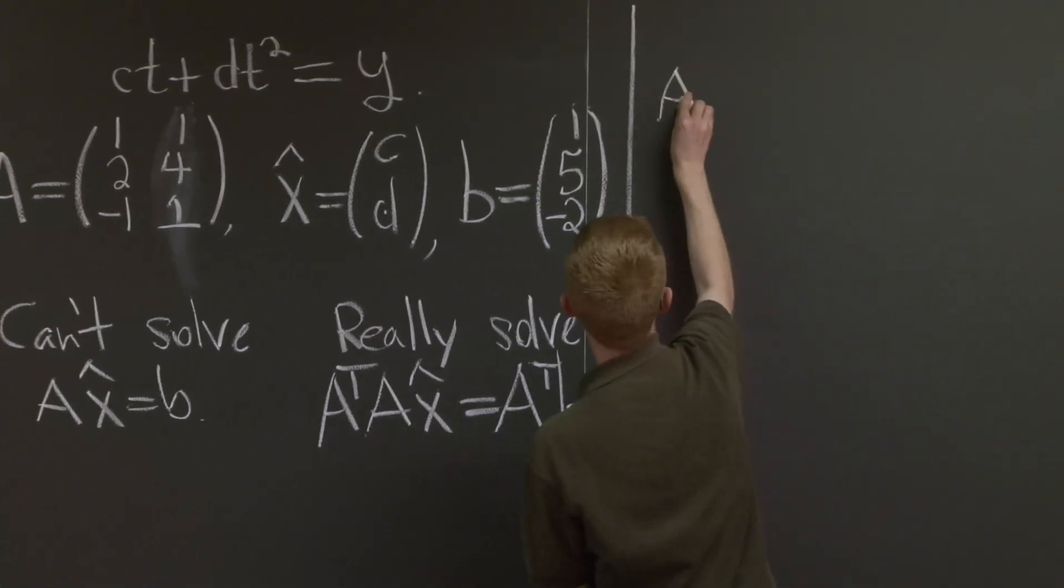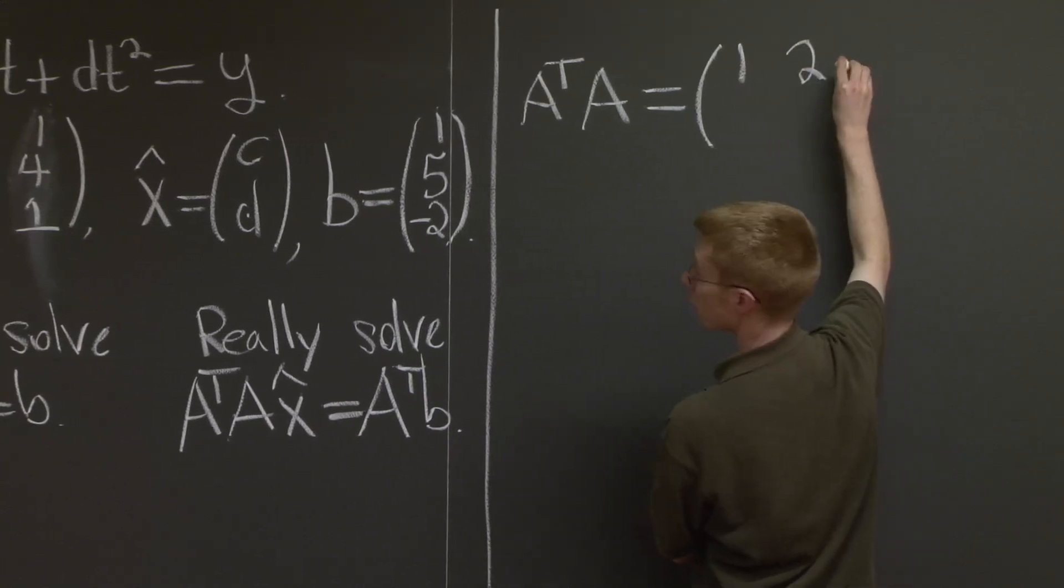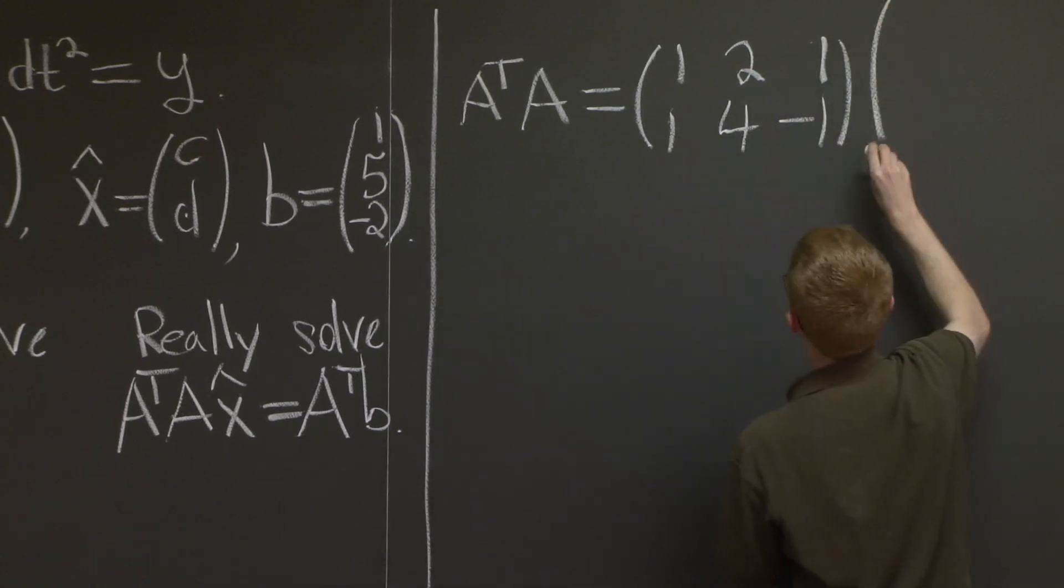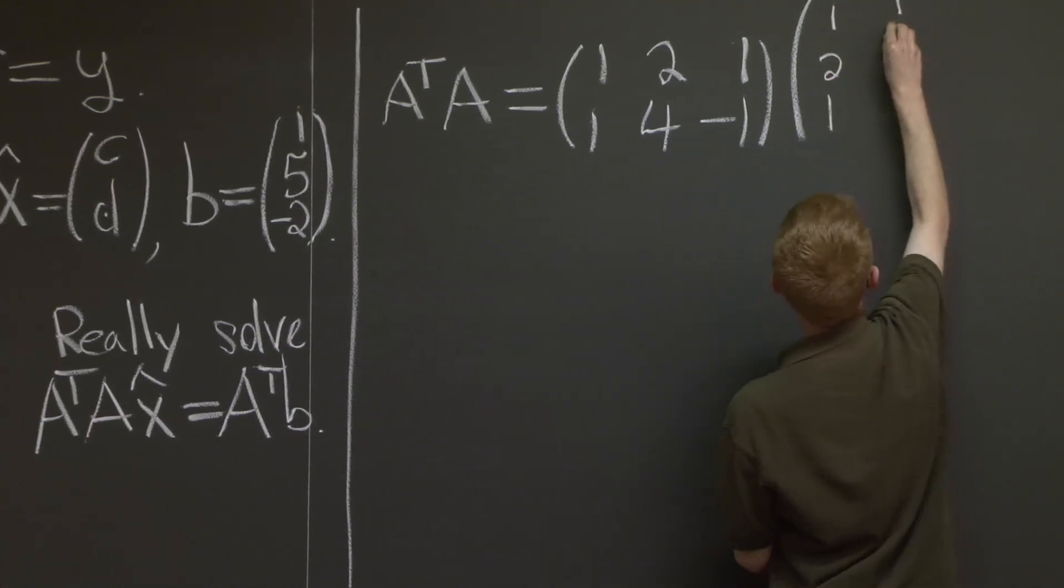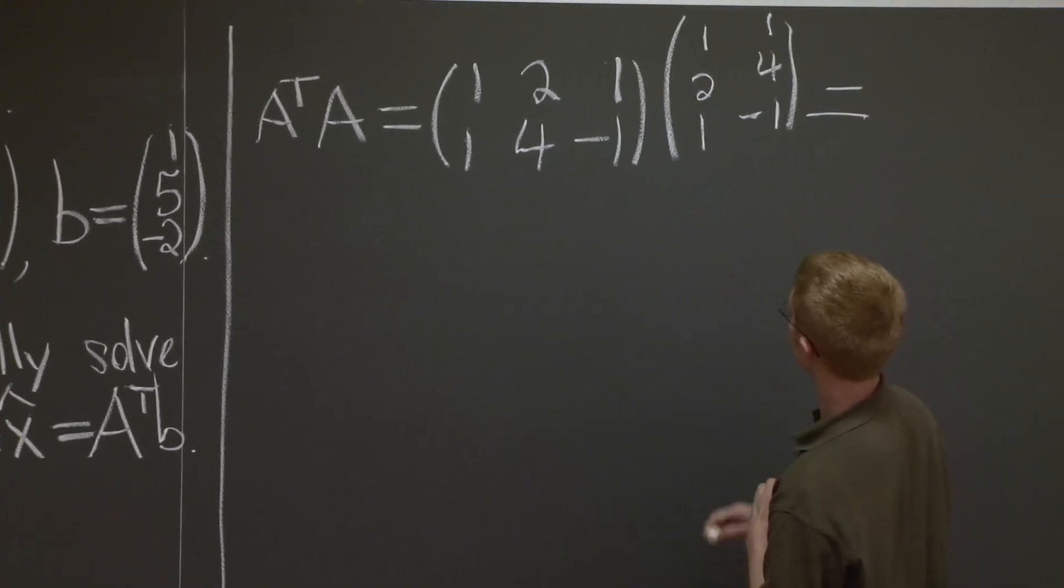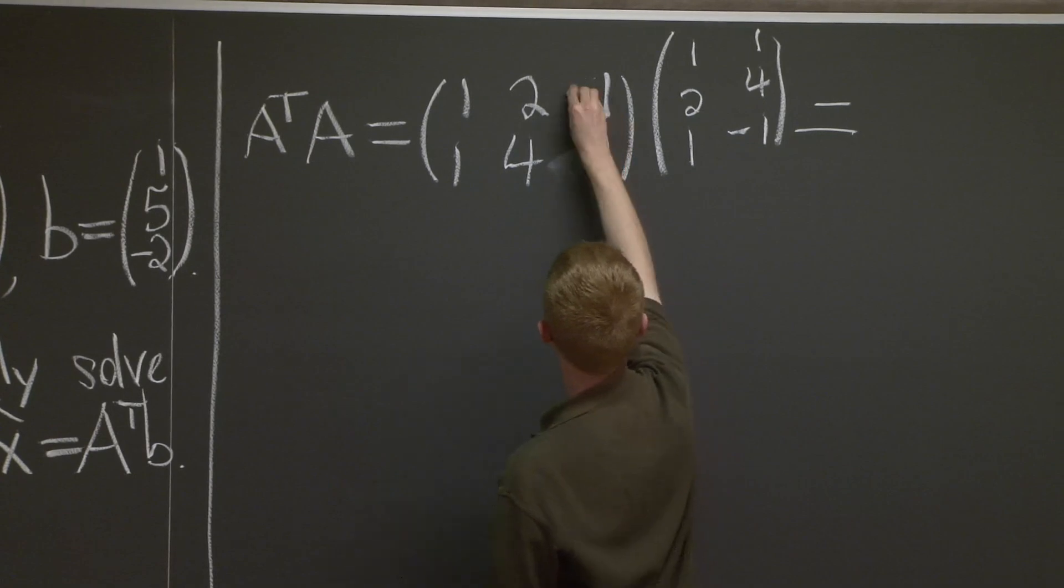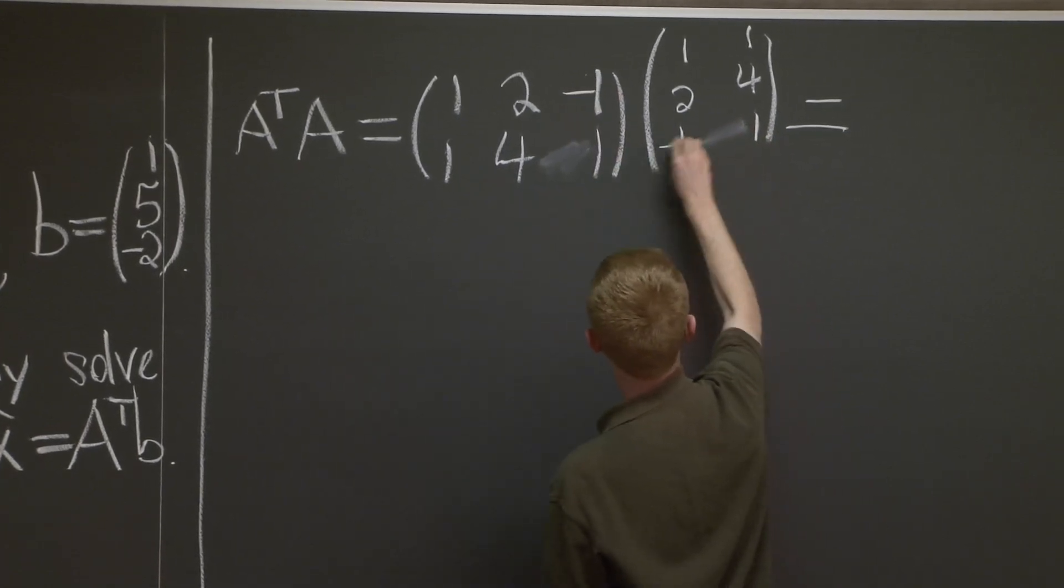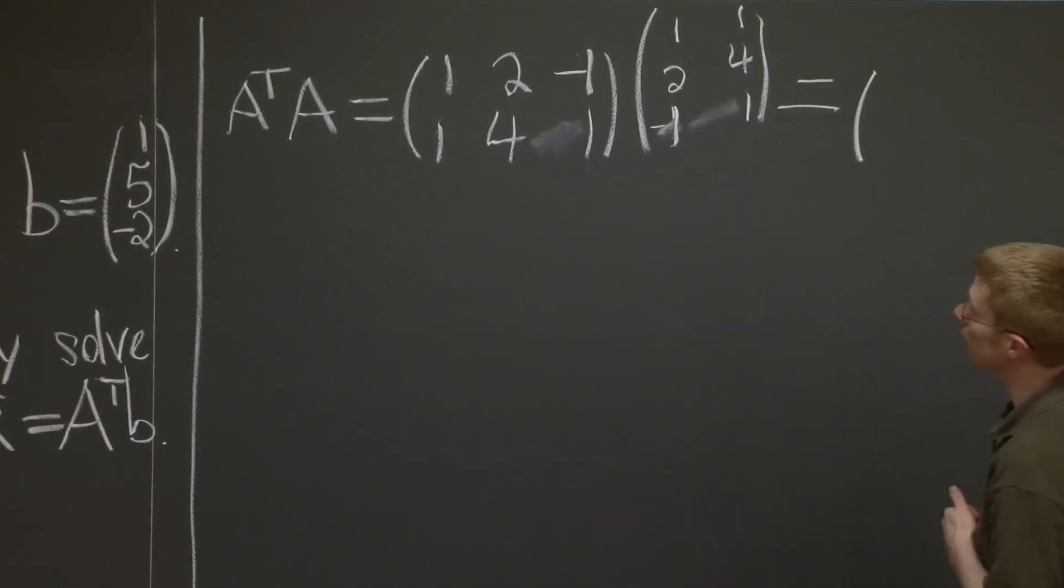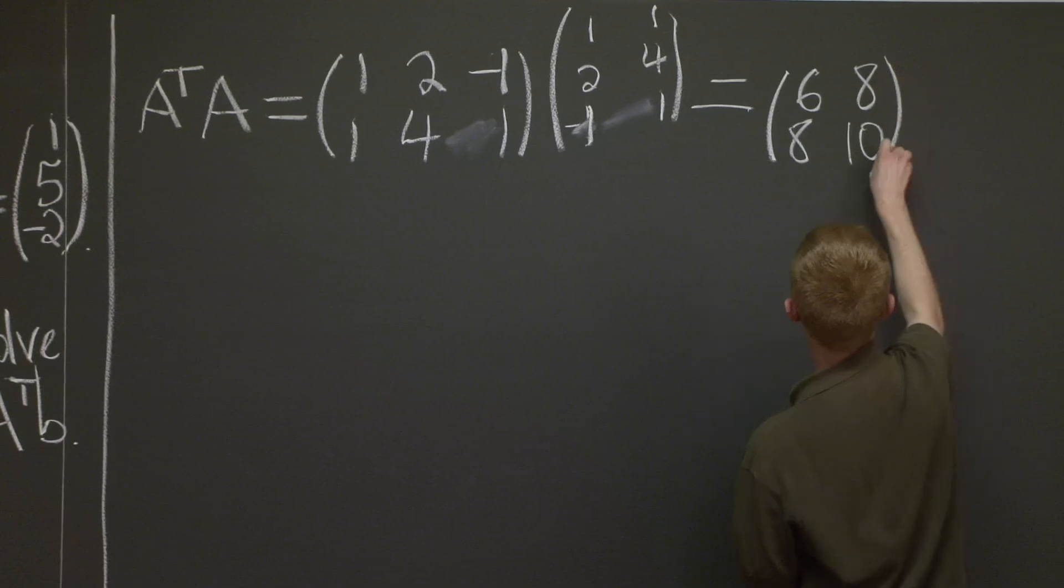So what is A transpose A? I'm going to do this kind of quickly because you should be good at multiplying matrices by now. I have the negative in the wrong place. Thank you. Thanks for that correction. I have the negative backwards there. Good. OK. And what do I get when I multiply these? I'll let you check that this is 6, 8, 8, and 10.